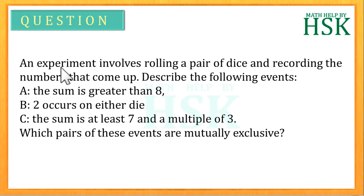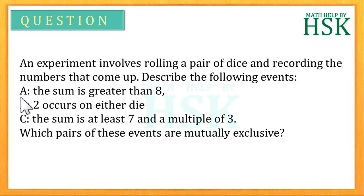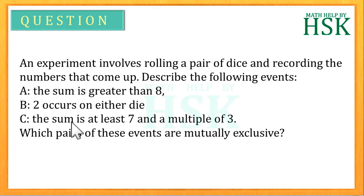An experiment involves rolling a pair of dice and recording the numbers that come up. Describe the following events: A is the event such that the sum is greater than 8; B is the event such that 2 occurs on either die; C is the event such that the sum is at least 7 and a multiple of 3. Which pairs of these events are mutually exclusive?